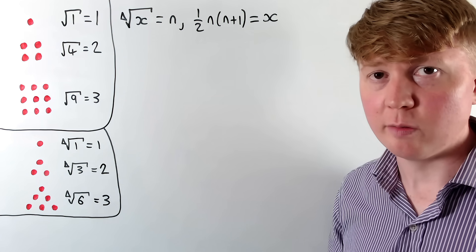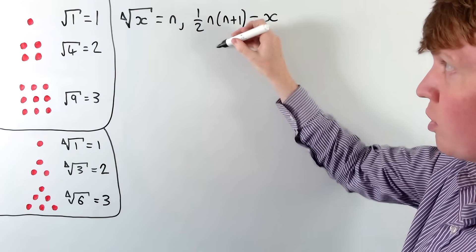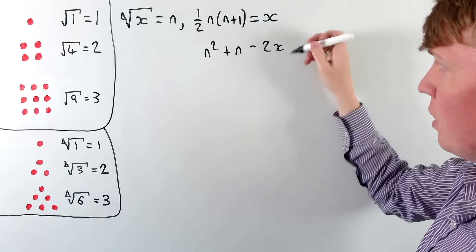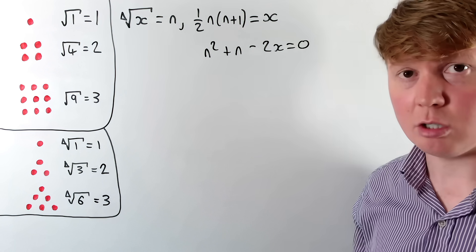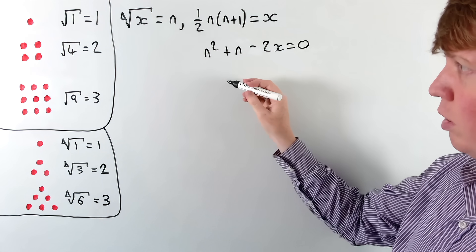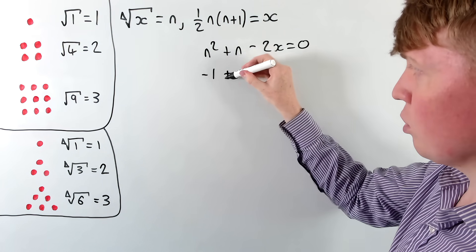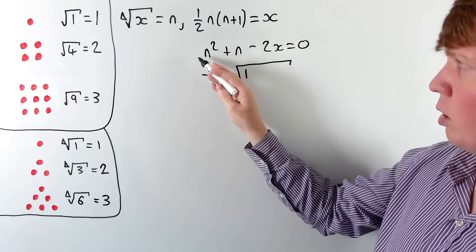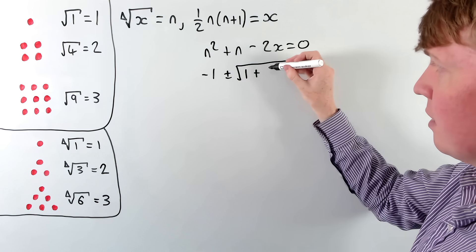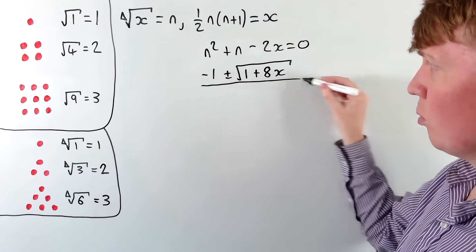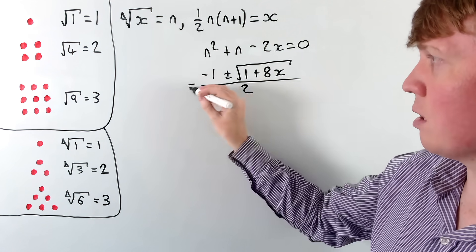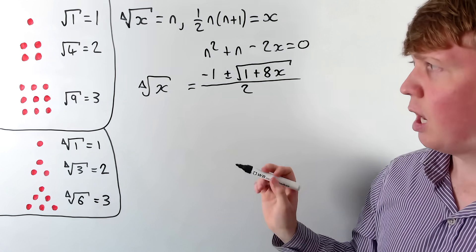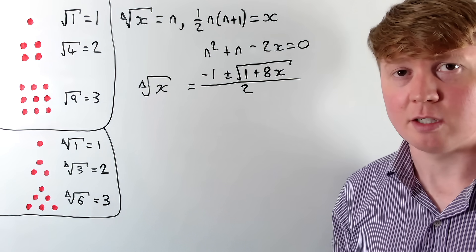This is a straightforward quadratic equation. Multiplying both sides by 2 and expanding gives n squared plus n equals 2x. Subtracting 2x from both sides gives n squared plus n minus 2x equals 0. Solving with the quadratic formula, we get n equals negative 1 plus or minus the square root of 1 plus 8x, all divided by 2. This defines the triangular root of x using a formula, and by default we take the positive answer as the triangular root, just as with square roots.